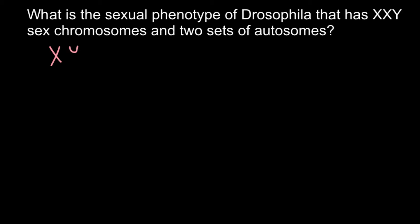Just like in mammals and humans, Drosophila fruit flies have X and Y chromosomes, but the sex determination system in Drosophila has its own peculiarities. For example, X and Y genotype would be male and X, X would be female. But actually, the Y chromosome does not define sex — it only defines fertility in males. The balance of X chromosomes to autosomes defines whether the phenotype is male or female.